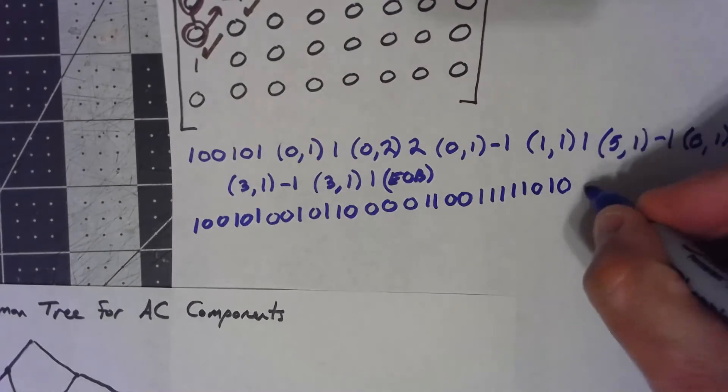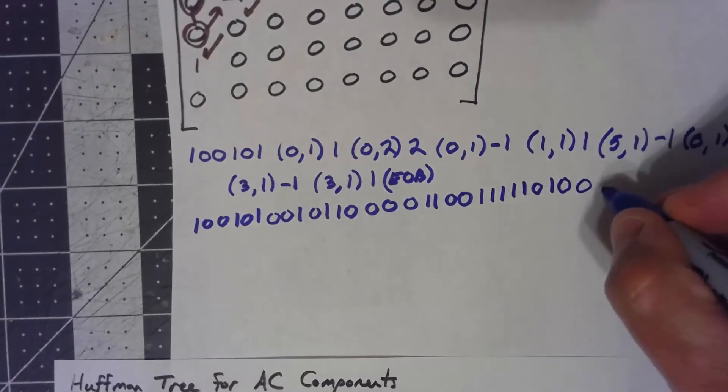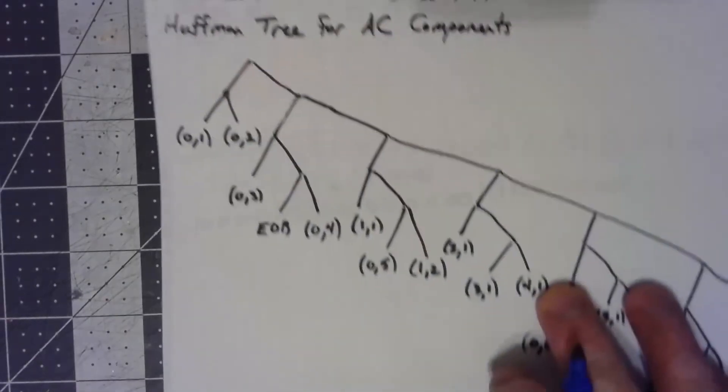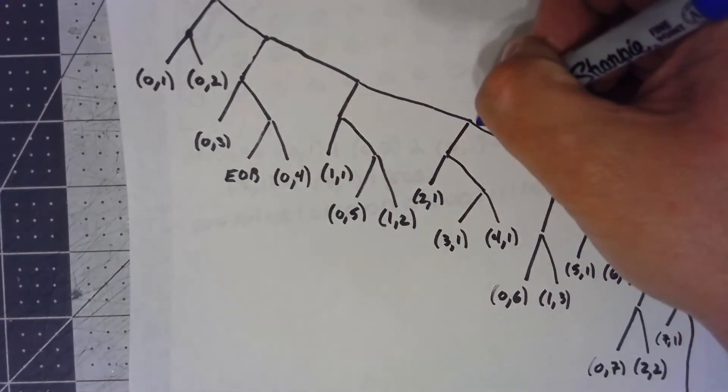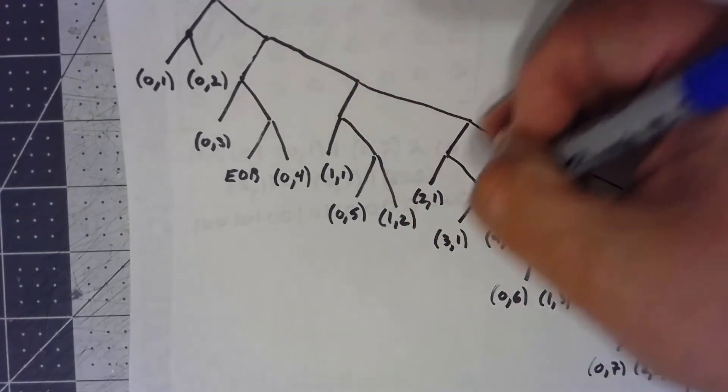So, then code a negative one, which is a zero. A zero, one is again a zero, zero. Encoding a one is a one. A three, one is one, one, one, zero, one, zero.